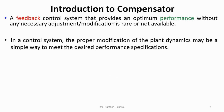In a control system, proper modifications of the plant dynamics are required in order to get the desired performance from the plant. The desired performance specifications — the response specifications in time domain — can be called transient response specifications or steady state response specifications for the applied step input. If you consider the transient response specification, it could be the peak overshoot or the minimum peak overshoot. In order to have such desired performance specifications, we need to give the proper settings to the control system.